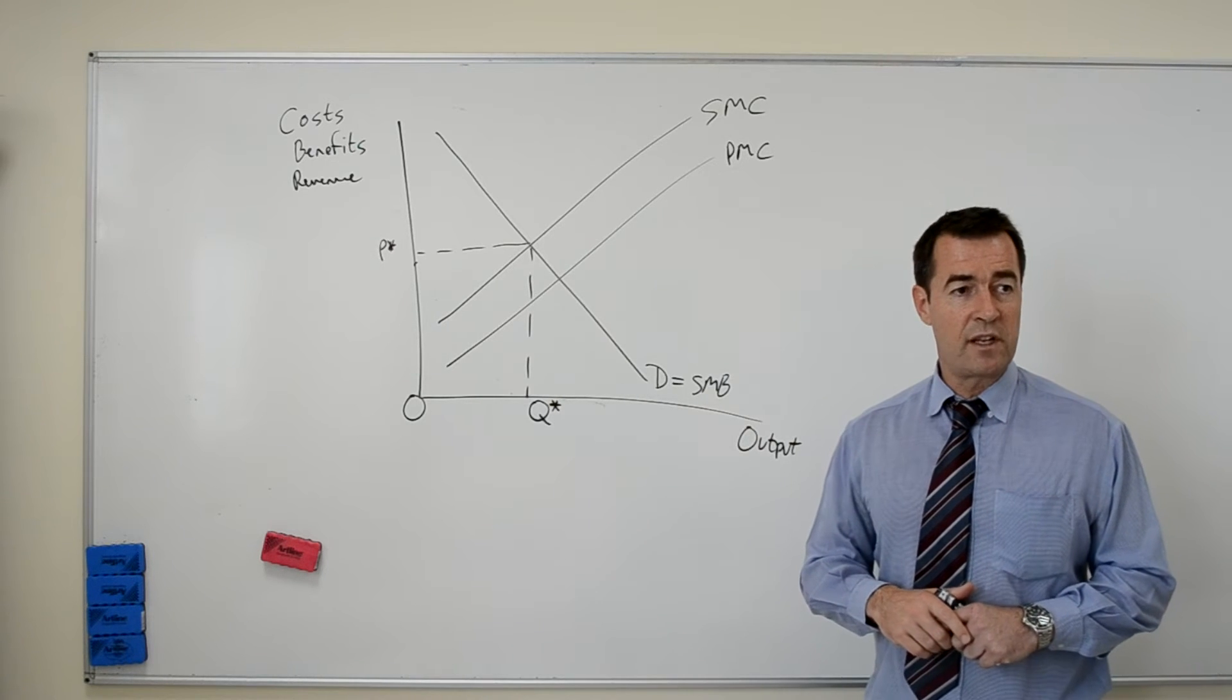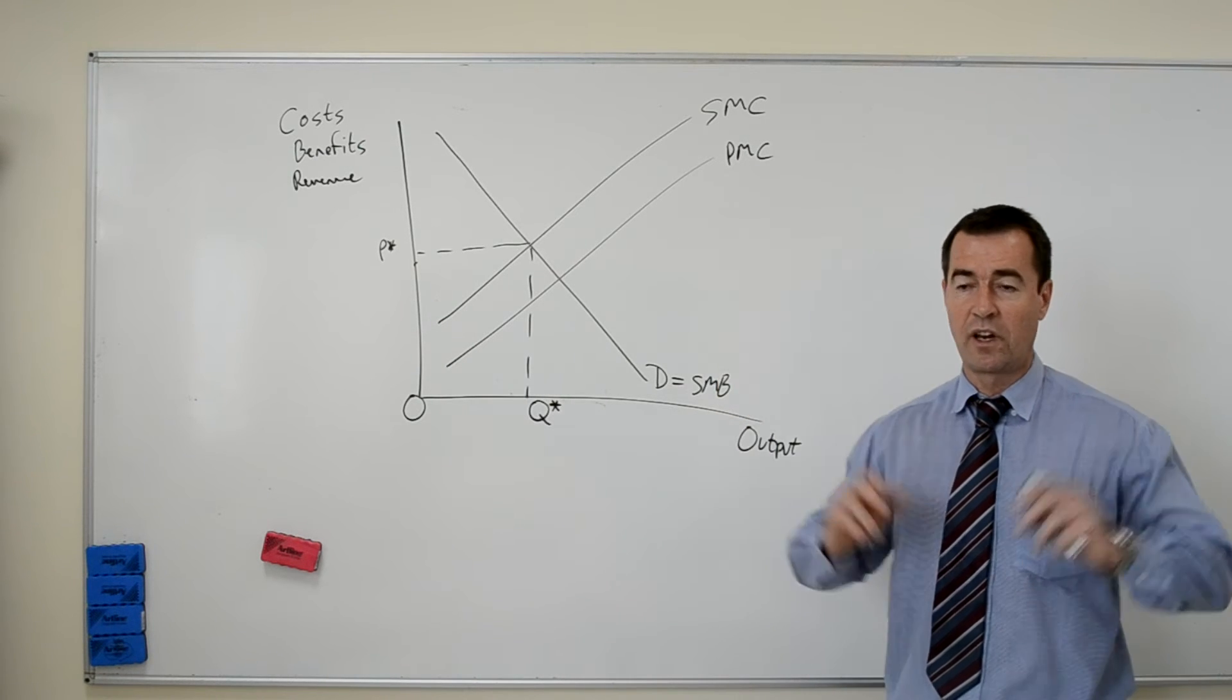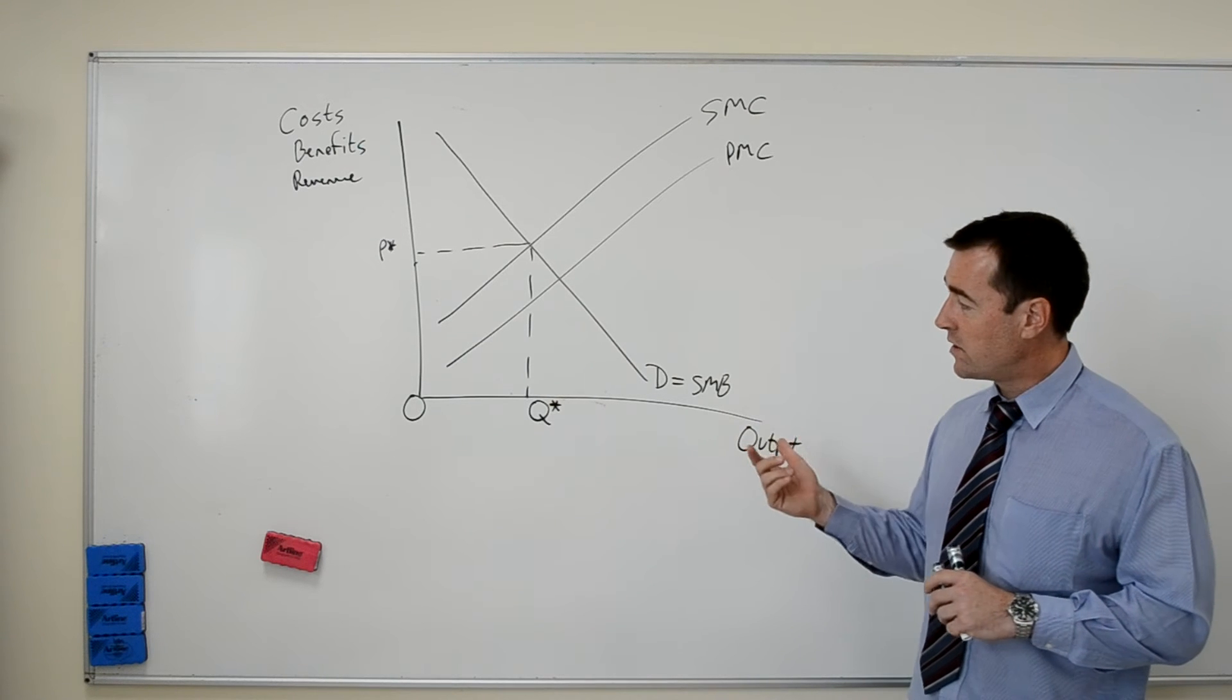So, the government response generally is to impose a tax. A tax forces the monopolist to internalize the negative externalities of the pollution. But in this case, look what happens.